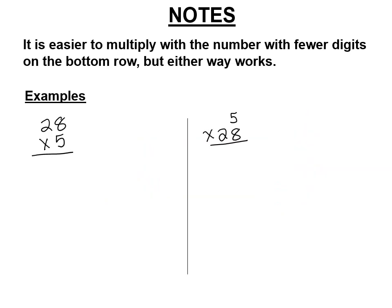Now, I want you to do both of these. You can do the one on the right. I'm going to do it just to show you that it's possible. 5 times 8 is 40. 5 times 2 is 10. Plus 4 is 14. So this is 140. So what would you do in this one?